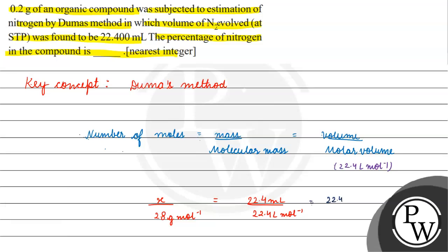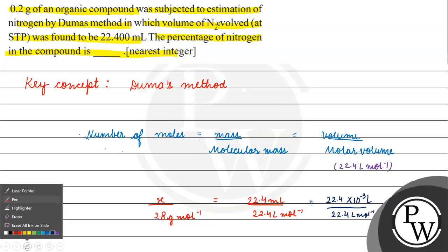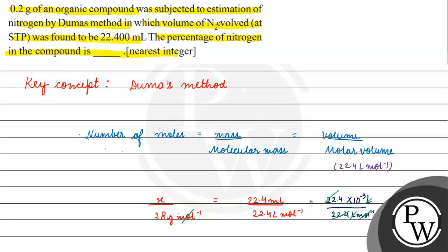Now we use this relation: 22.4 × 10⁻³ liters by 22.4 liter per mole. x will basically come out to be 28 × 10⁻³ grams. This is the mass of nitrogen.